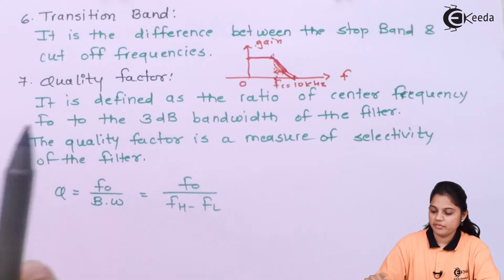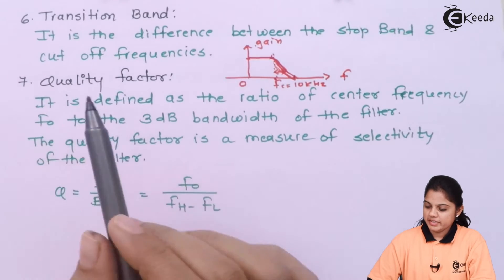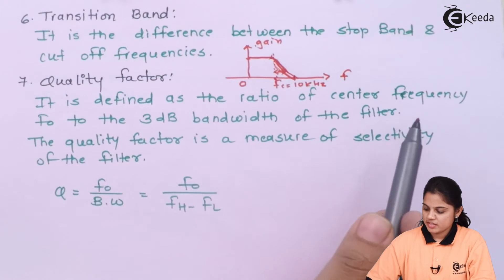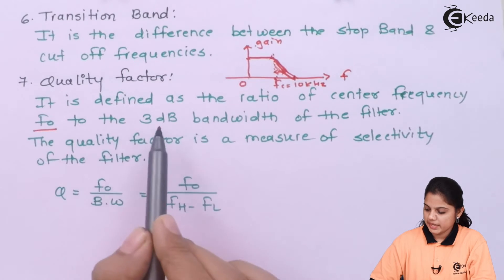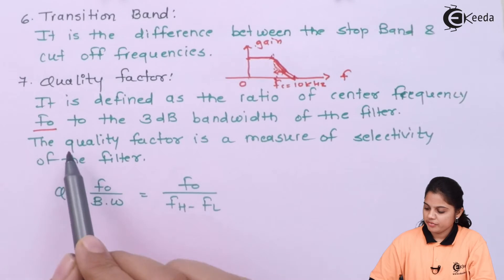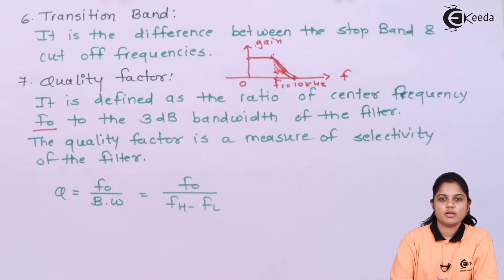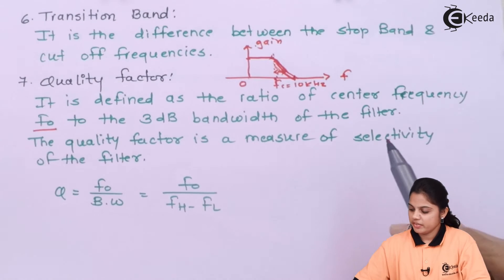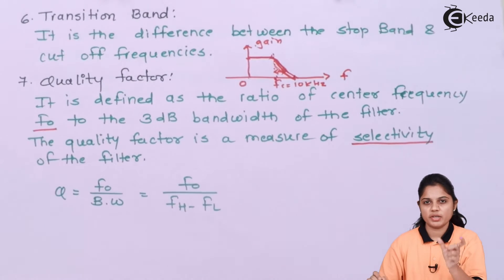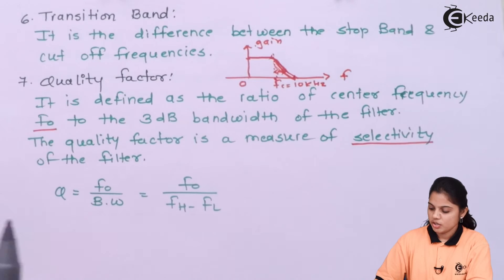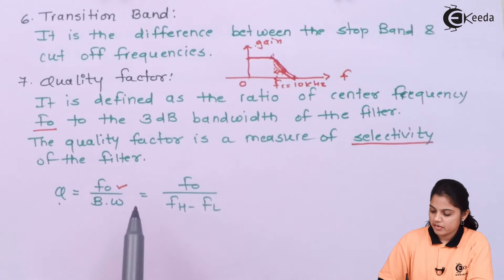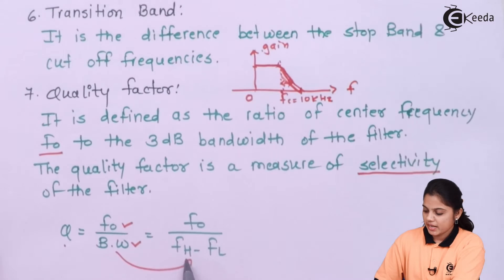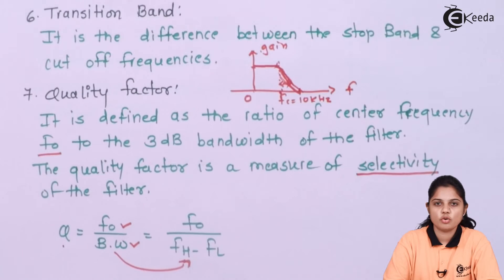Seventh is the quality factor. It is defined as the ratio of center frequency F0 to the 3 dB bandwidth of the filter. The quality factor is a measure of selectivity — the ability to tune the filter to a particular frequency. So the quality factor equals center frequency divided by bandwidth, where bandwidth is FH minus FL.